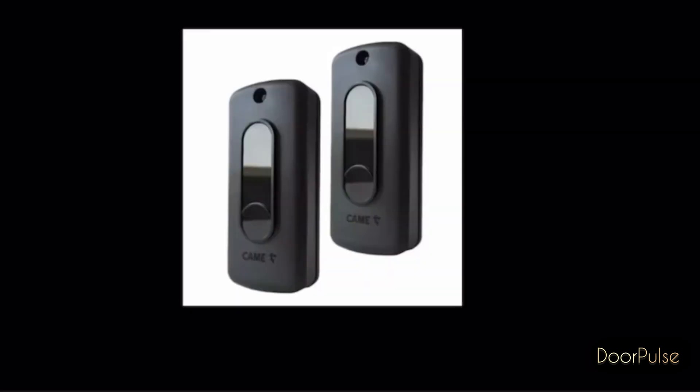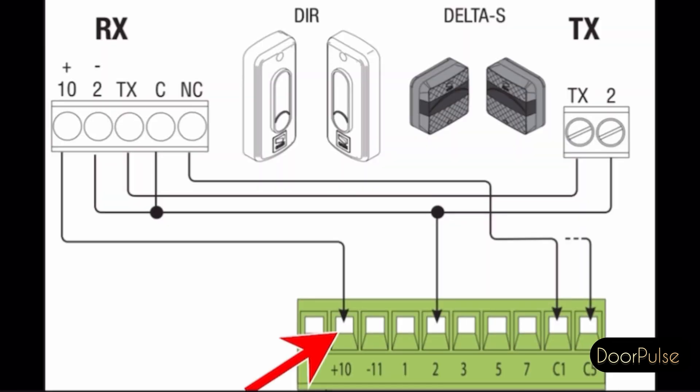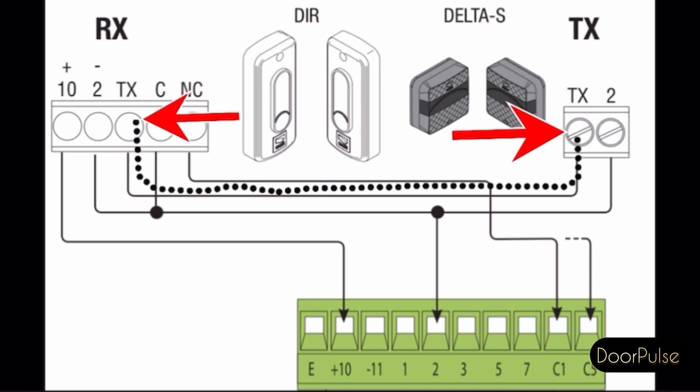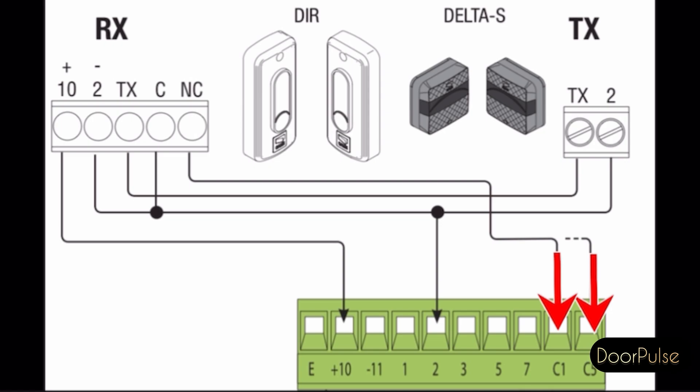If you have dire or delta type of photo cell, pin 10 of control board will direct connect to RX pin 10. In receive sensor pin TX will connect direct to transmitter sensor. C1 or C5 any one of the connect to NC. And reaming will connect to common pin too.